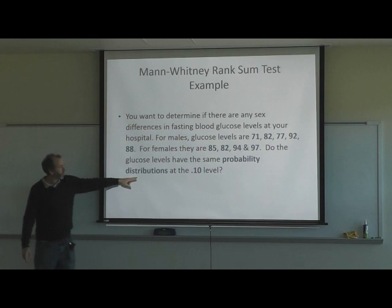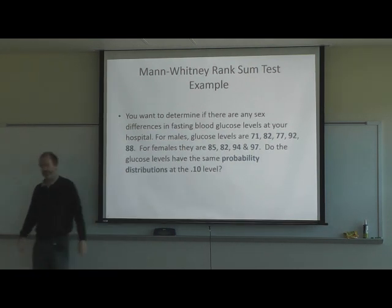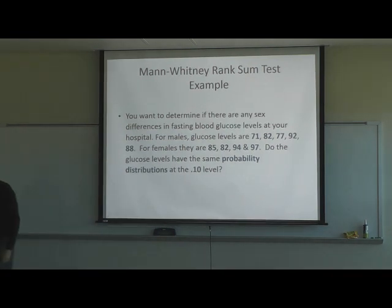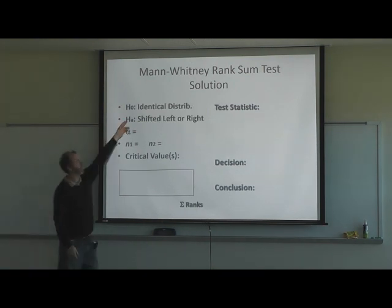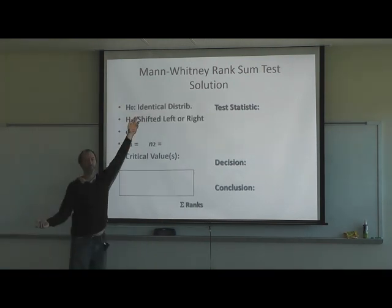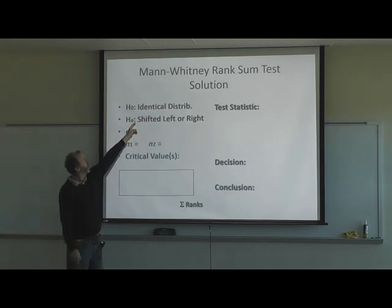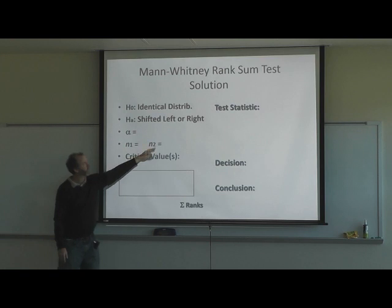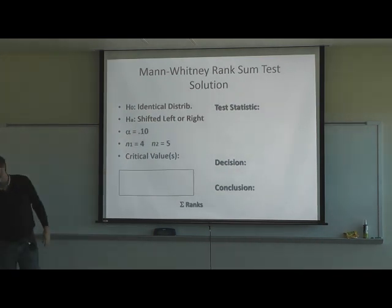We're testing whether glucose levels have the same probability distribution at a 0.10 significance level. The null hypothesis is that they are identically distributed. The alternative hypothesis is that the distributions are shifted left or right — we don't care which direction. Alpha is 0.10.